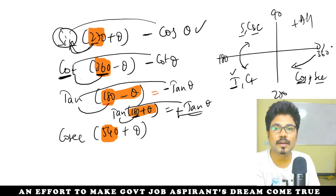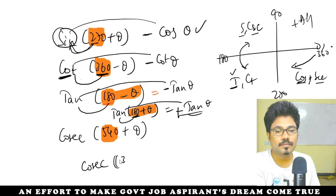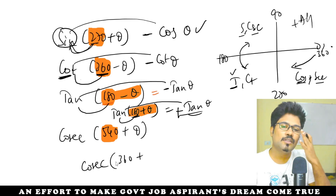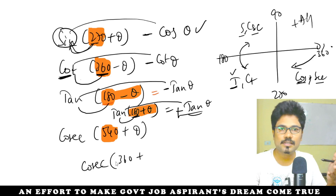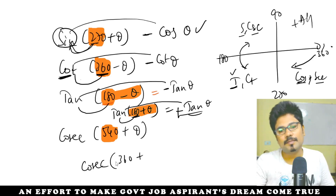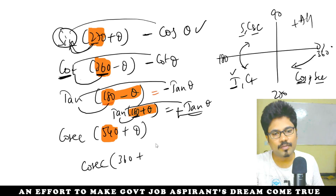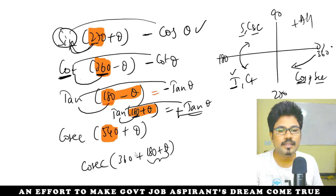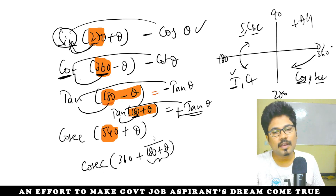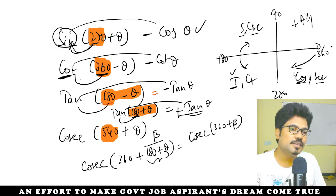For cosec(540 plus theta): we can write 540 as 360 plus 180. So cosec(540 plus theta) equals cosec(360 plus 180 plus theta). Since cosec(360 plus beta) equals cosec(beta) — 360 is even, no change — this becomes cosec(180 plus theta).